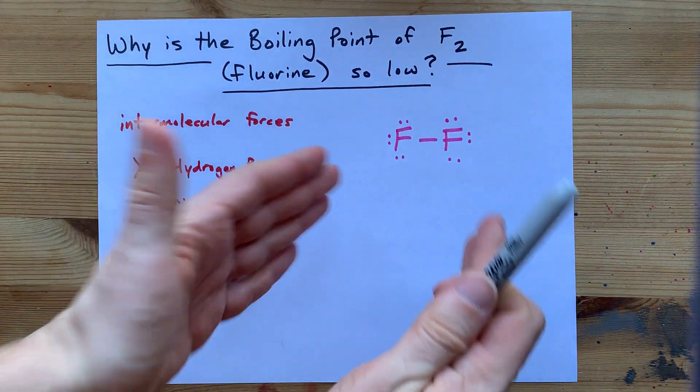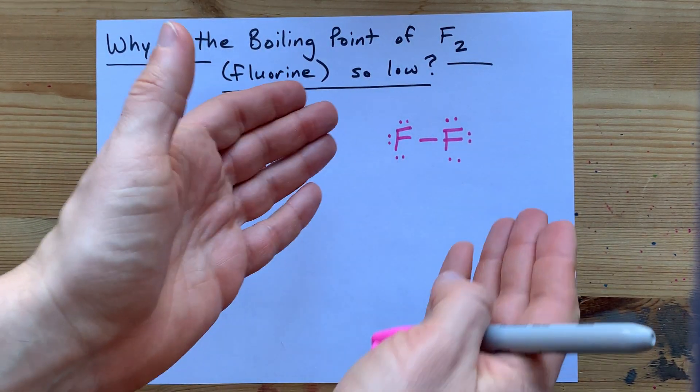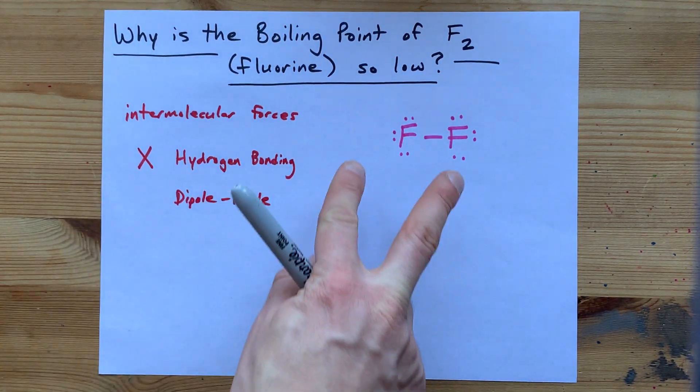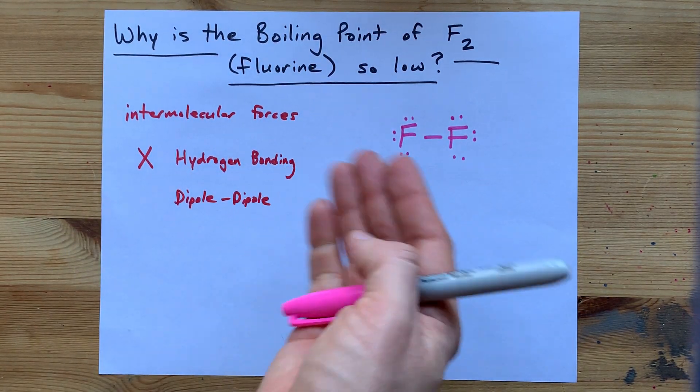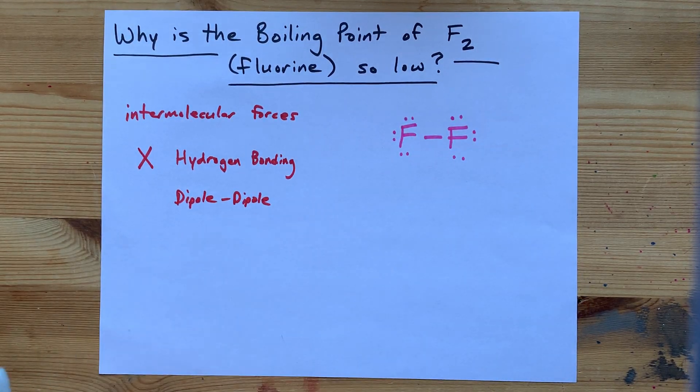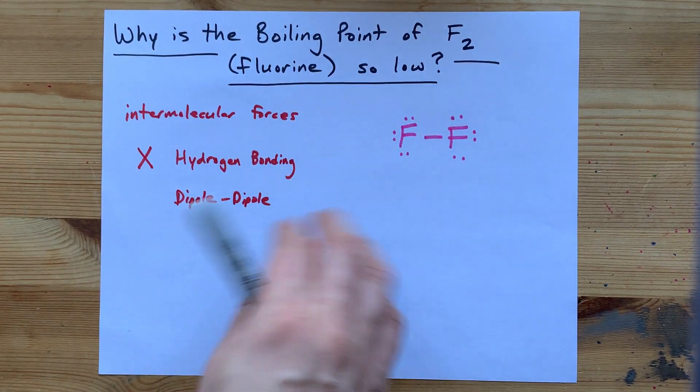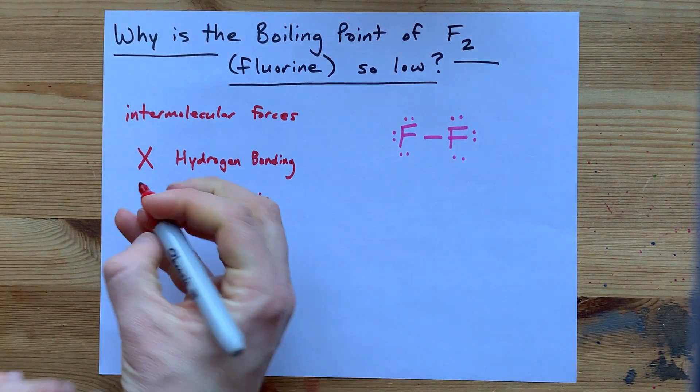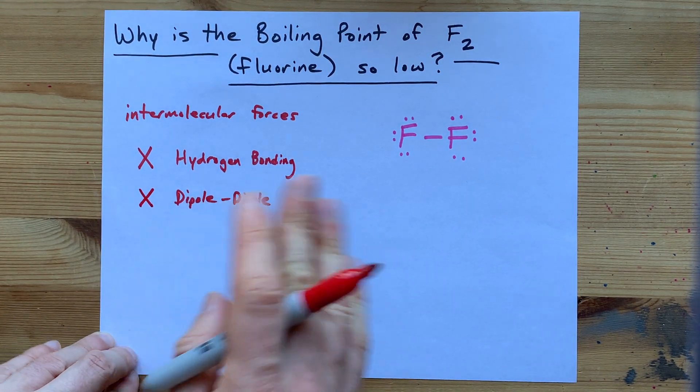These two Fs are the same. I mean, they're not exactly the same atom, but they have the same electronegativity because they're both fluorines. The difference in electronegativity is zero, and it's a symmetrical molecule. This is a very non-polar molecule, and so it does not have dipole-dipole forces either.